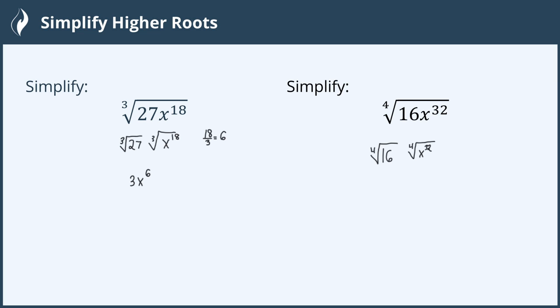Again, a calculator can be used to find a root of any index. The fourth root of 16 is 2. The fourth root of x to the 32 is saying, hey, there's 32 x's. I need to break them up into four equal groups. 32 divided by 4 is 8. So when this comes out, it comes out as x to the 8th power.